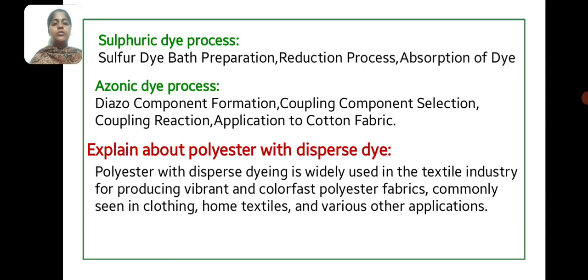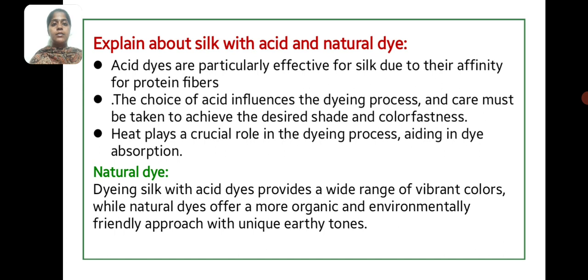Dyeing polyester with disperse dyes is widely used in the textile industry for producing vibrant and colorful polyester fabrics, commonly seen in clothing, home textiles, and various other applications. Acid dyes are particularly effective for silk due to their affinity for protein fibers. The choice of acid influences the dyeing process, and care must be taken to achieve the desired shades and color. Heat plays a critical role in the dyeing process, aiding in dye absorption. Dyeing silk with acid dyes provides a wide range of vibrant colors, while natural dyes offer a more organic and environmentally friendly approach with unique earthy tones.